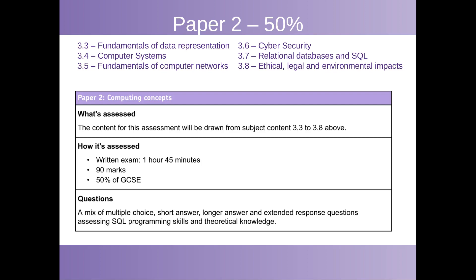Section 3.5 is Fundamentals of Computer Networks. You study how devices communicate with each other, whether over wireless, Bluetooth, or through a cable. We also look at how the internet works and how computers communicate across the world. Section 3.6 is about Cyber Security — how you keep your computer and its data safe from people who might want to destroy or steal it, or take control of your computer. As soon as you network computers, you have to be careful that unauthorised people aren't accessing them.